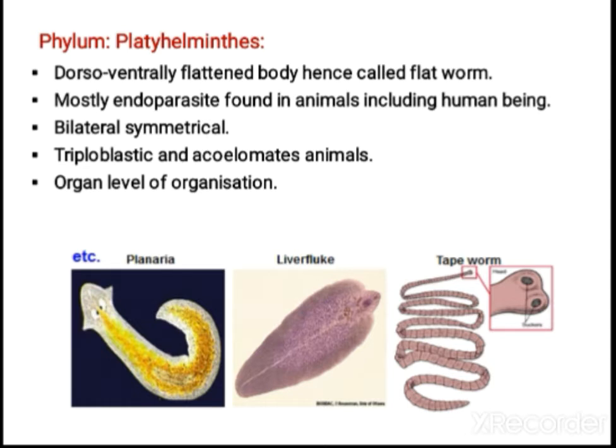First let us study regarding Platyhelminthes. Platyhelminthes are organisms having a dorso-ventrally flattened body structure. Dorsal side is the upper side and ventral side is the lower side — it has been flattened, that is why 'flatworm.' Mostly these all are endoparasites; they live inside human beings or other animals.